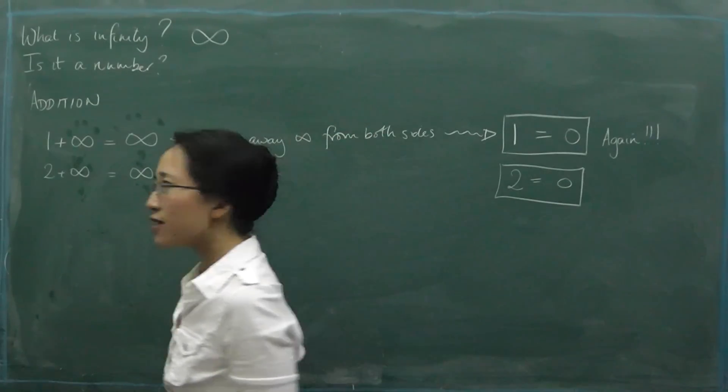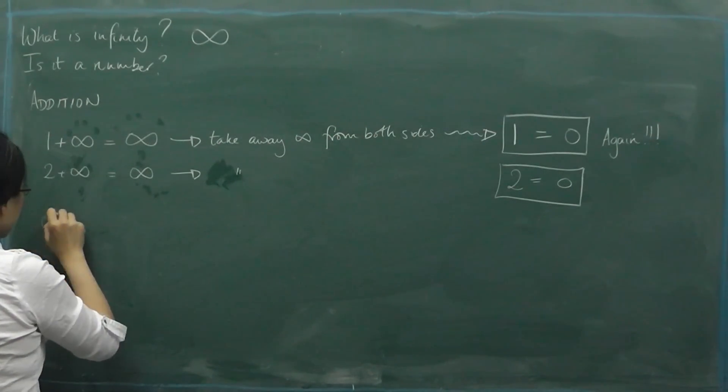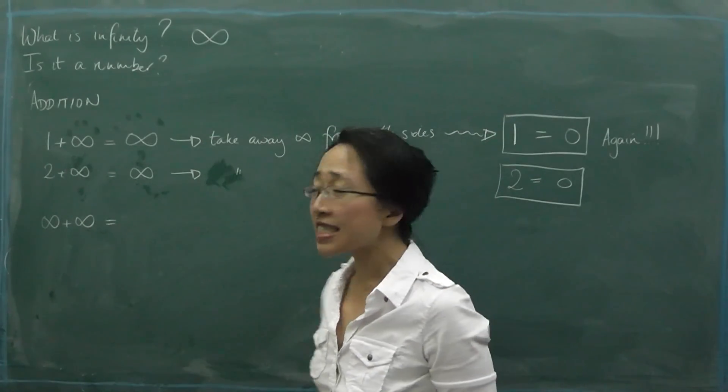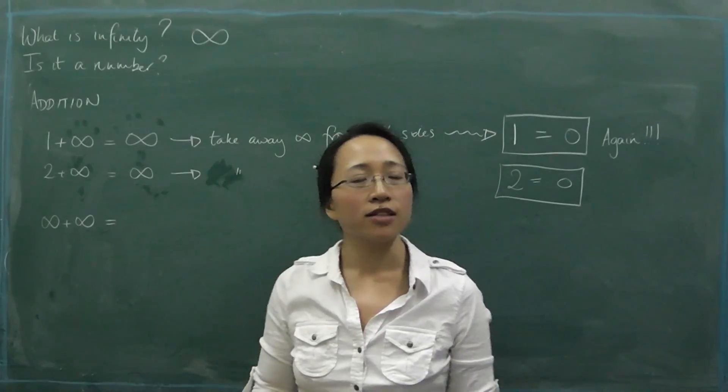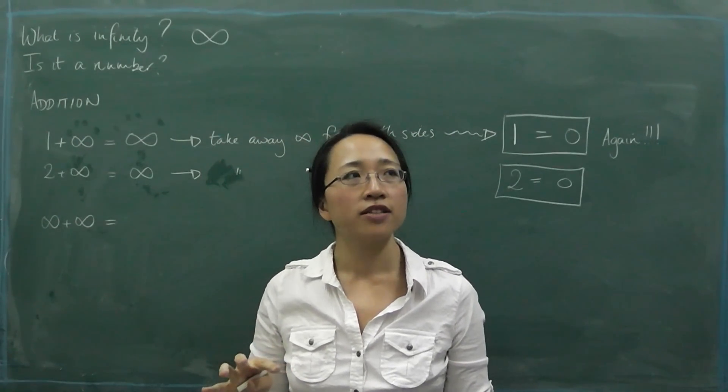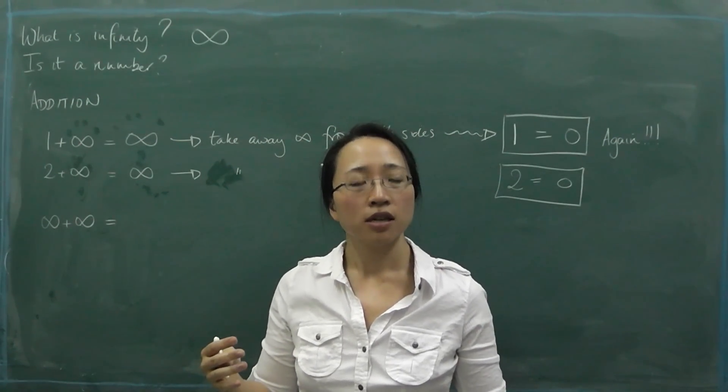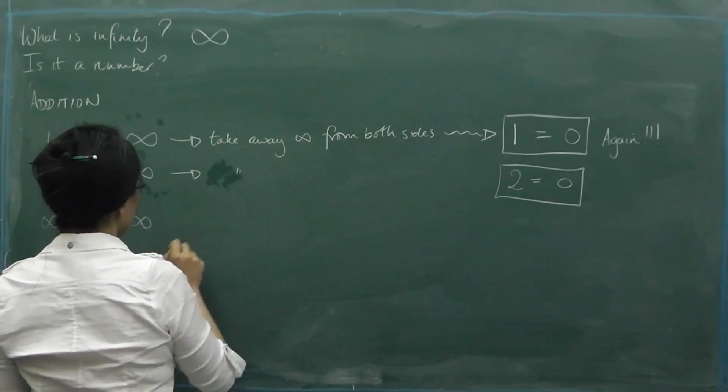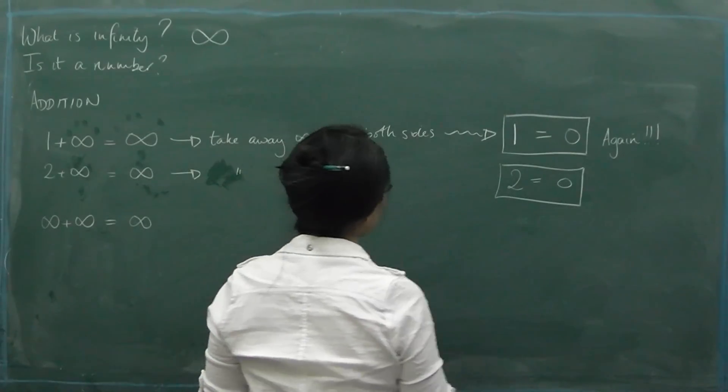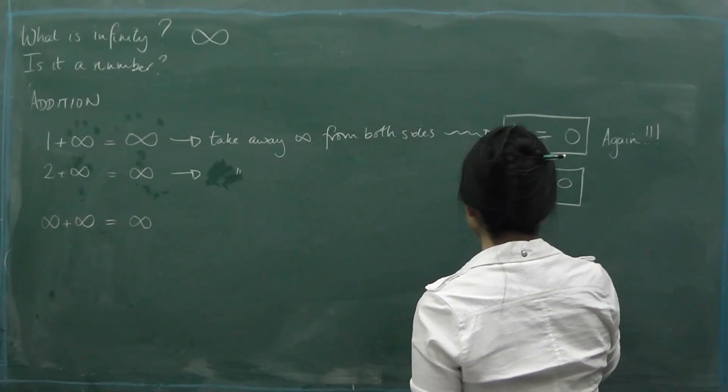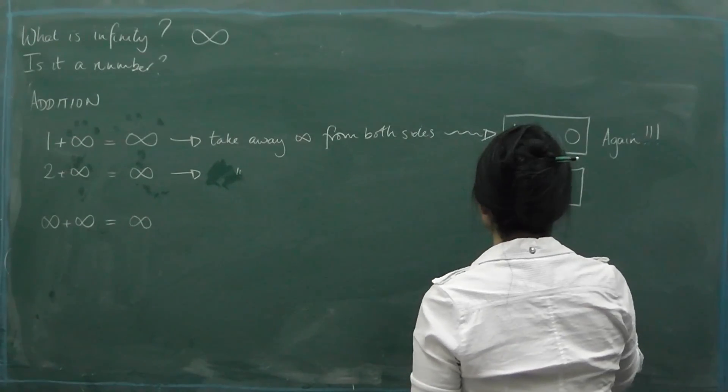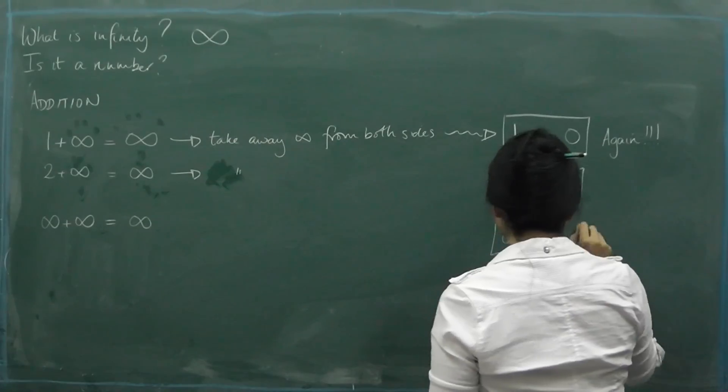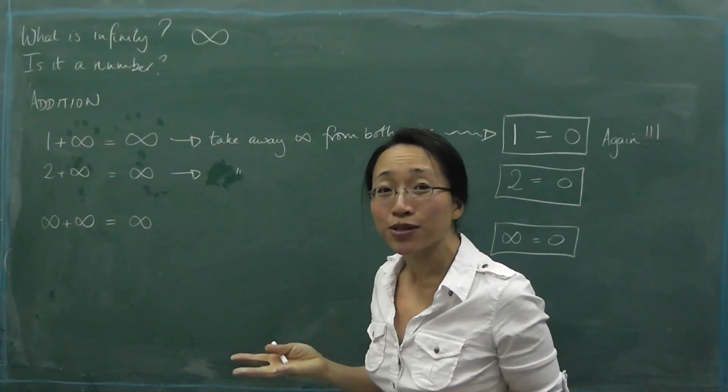Let's try doing infinity add infinity. Well, infinity add infinity. Let's think about that for a second. If I take infinity and add more infinity, it's just going to be more infinity, right? So now we can take away infinity from both sides. If we take away infinity from the left, this time we'll get infinity. And if we take away infinity from the right, we'll get zero. So now we've got something even worse. We've got that infinity equals zero.